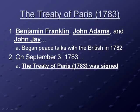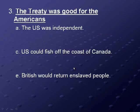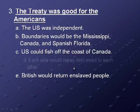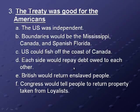The treaty ended the war and set up terms for both sides. It was good for the Americans: the U.S. was recognized as independent; borders would be the Mississippi River to the west, Canada to the north, and Spanish Florida to the south; the U.S. could fish off the coast of Canada; both sides would repay debts owed to each other; the British would return enslaved people to the Americans; and Congress would tell people to return property taken from Loyalists.